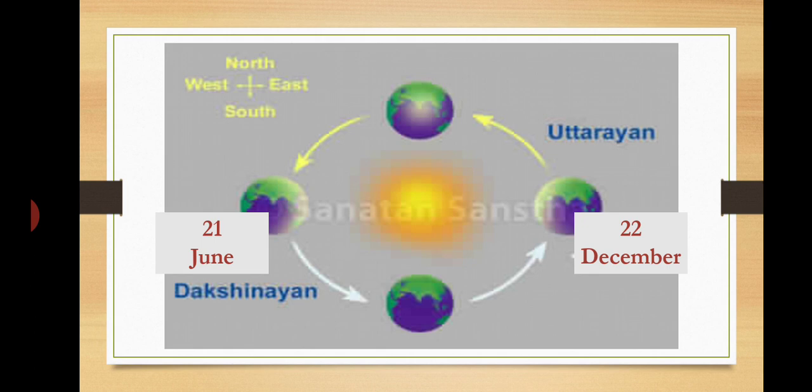Let us understand apparent movement of the Sun with the help of the following diagram. As we all know, the Sun never moves — it is the Earth which rotates and revolves around the Sun. So from 21st June to 22nd December, when the Earth rotates and revolves around the Sun, it seems as if the Sun moves towards the south, and that period is called Dakshinayan. From 22nd December to 21st June, it seems as if the Sun moves towards the north, and that period is called Uttrayaan.